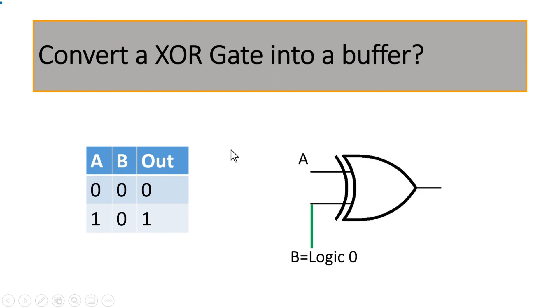And A can be 0 or 1. So when both A and B are 0, output is 0. That means the output is equal to input A.